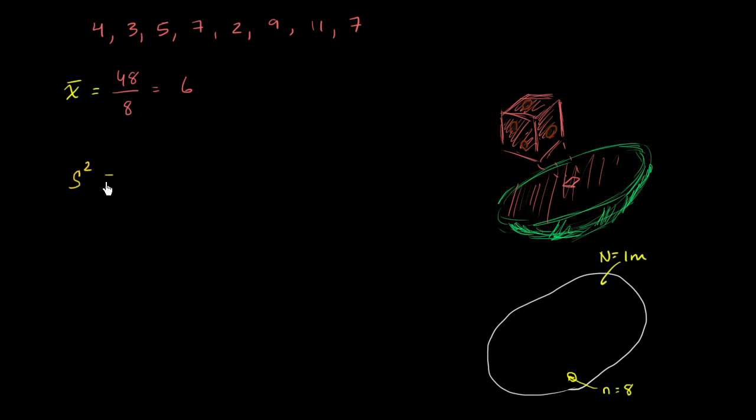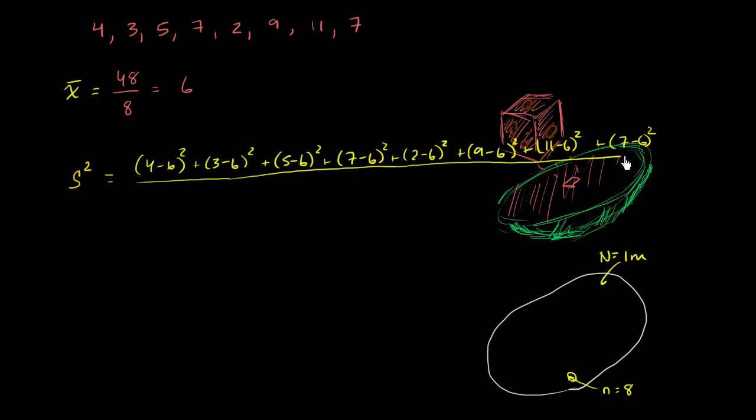So we're going to calculate the unbiased sample variance. And if we do that, what do we get? Well, it's just going to be 4 minus 6 squared, plus 3 minus 6 squared, plus 5 minus 6 squared, plus 7 minus 6 squared, plus 2 minus 6 squared, plus 9 minus 6 squared, plus 11 minus 6 squared, plus 7 minus 6 squared. All of that divided by, not by 8. Remember, we want the unbiased sample variance. We're going to divide it by 8 minus 1. So we're going to divide by 7.